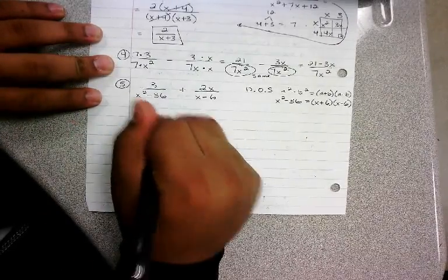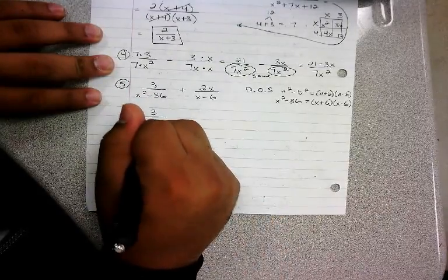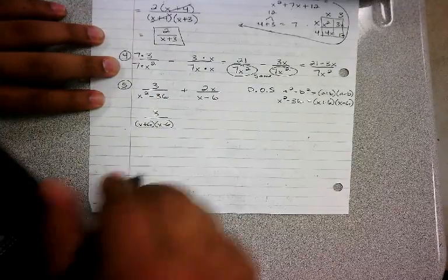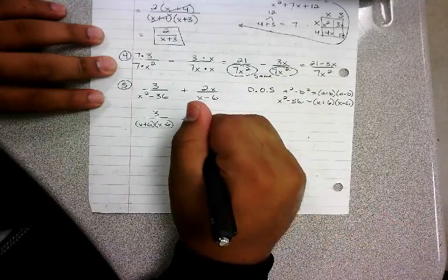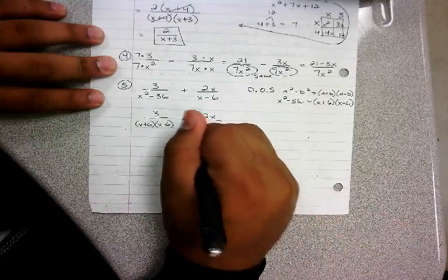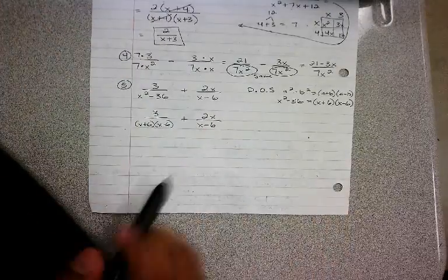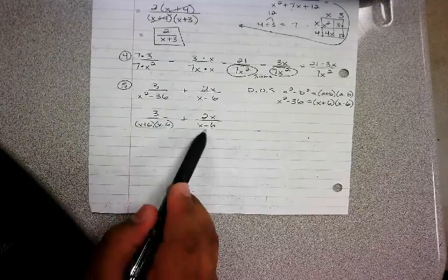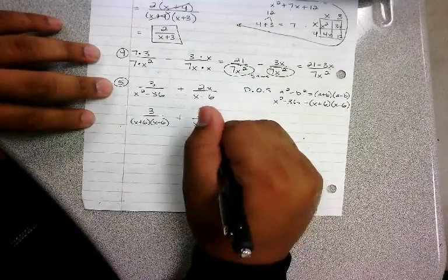So I have 3 over x plus 6 times x minus 6, plus you got 2x over x minus 6. My denominators are still not the same. I do have one thing in common, but I have to get this on the other side, so all I gotta do is multiply.